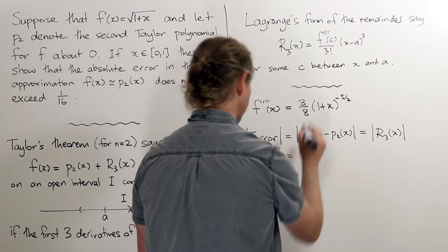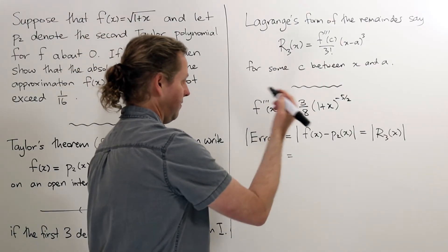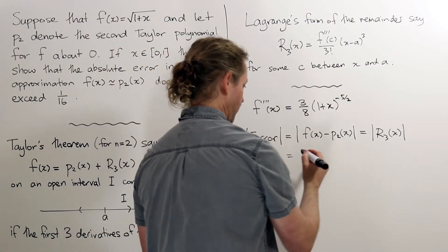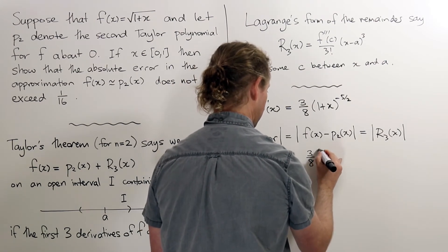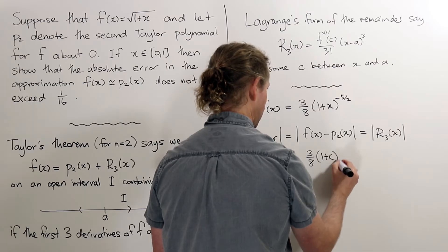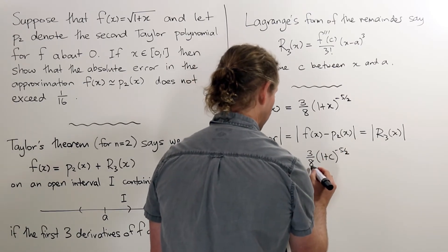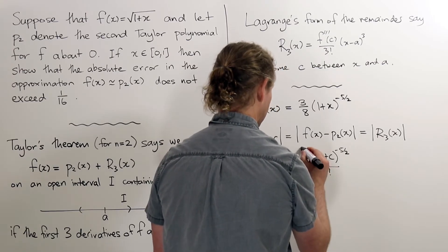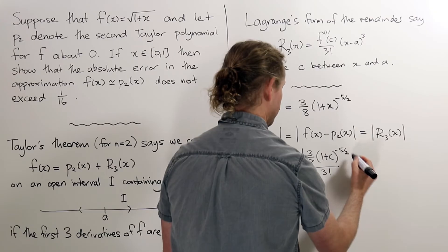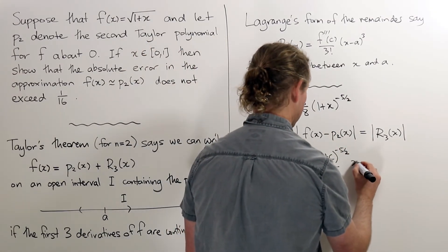Well we have a form of the remainder up here. It's the third derivative evaluated at some point c, so here's the third derivative: 3/8 times (1 plus c) to the minus 5/2 divided by 3 factorial, times by, now we're using a equals 0, so this is just x cubed.